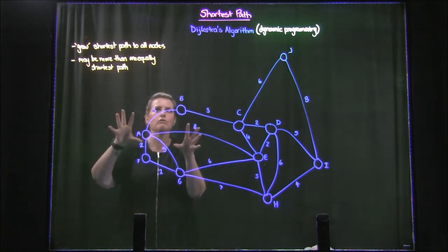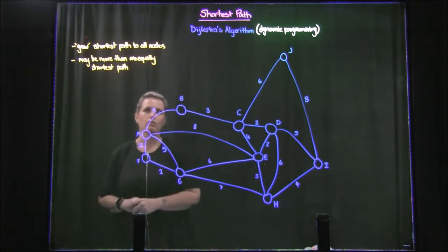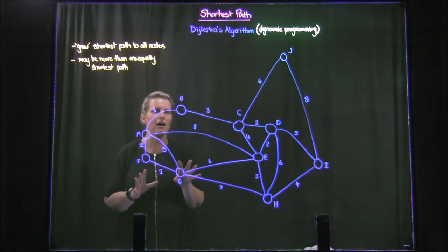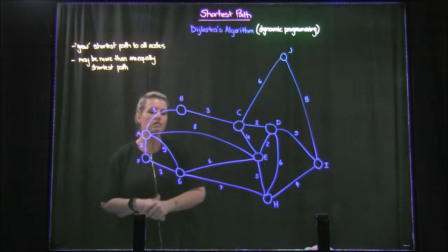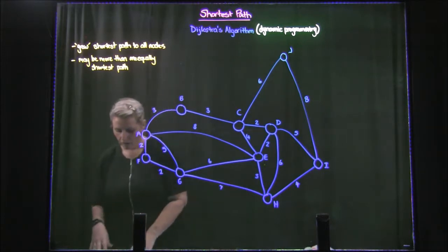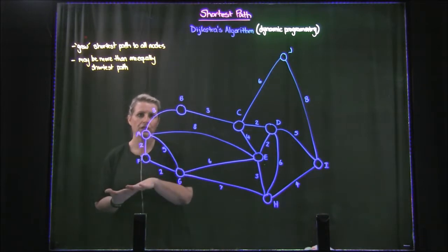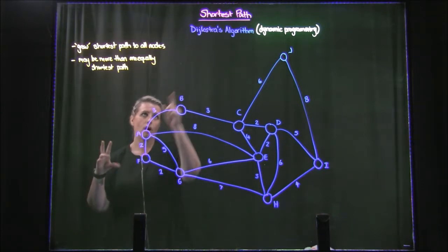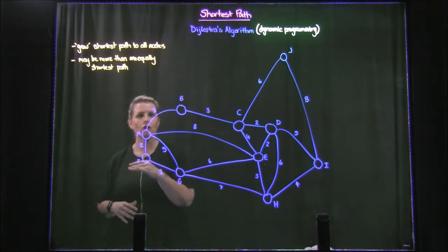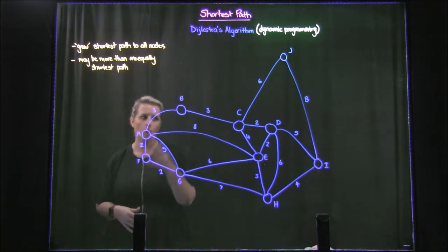So basically what he does is he grows the shortest path to all of the nodes from the starting node. There may be more than one equally shortest path. Some cases may ask you to actually find all of them, but most applications are just to find a shortest path. So what we're going to do is I'll get you to pause the video, go to your OneNote, and in that OneNote are the six steps for Dijkstra's algorithm that you're going to be following through with this video.